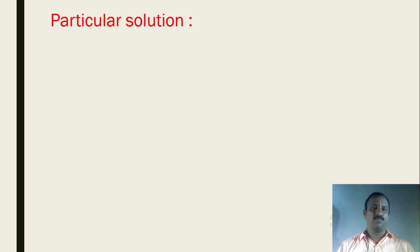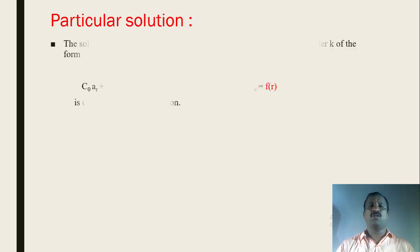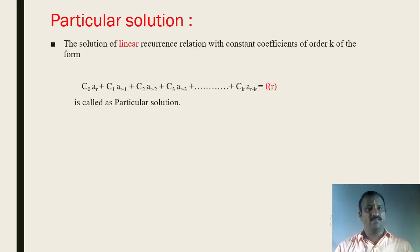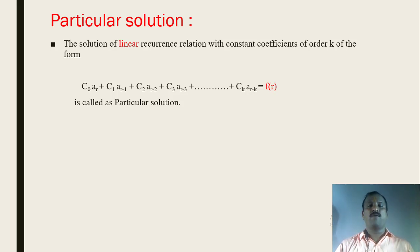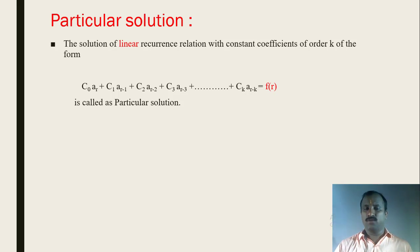What is the definition of particular solution? Let us recall. The solution of a linear recurrence relation with constant coefficients of order k, of the form c₀·aᵣ + c₁·aᵣ₋₁ + c₂·aᵣ₋₂ + ... + cₖ·aᵣ₋ₖ = f(r), is called a particular solution. When the RHS f(r) is not zero, that solution is known as a particular solution.